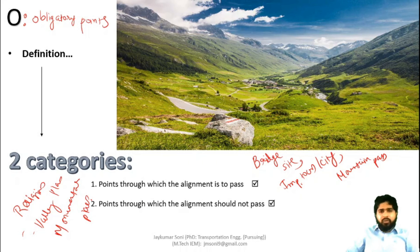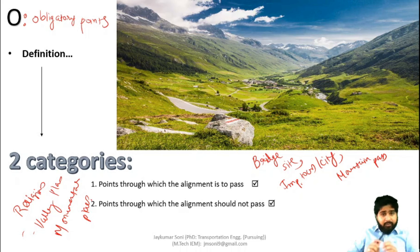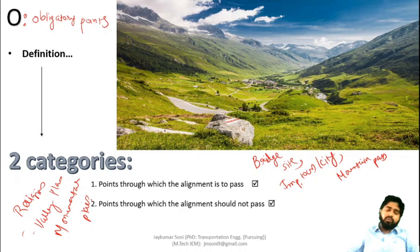Now you have learned all the things: Proper Drainage, Availability of Construction Material, Traffic, Economic Factor, Low Grade and Easy Curves, Land Acquisition, Geographical Features, Obligatory Points, Miscellaneous, and Crossing. These are the factors covering highway alignment. This was all about road alignment, its types, and factors affecting it. Please repeat this, write it down, and prepare your own notes. Thank you.